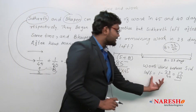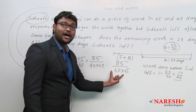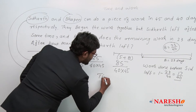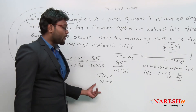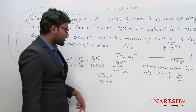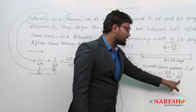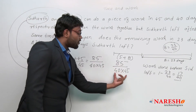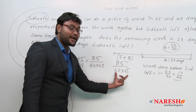We know the work done before Siddhartha left is 17/40. We also know the one day's combined work of Siddhartha and Bhupen is 85/(40 × 45). Using the formula: time = work ÷ one day's work, we can find the number of days they worked together.